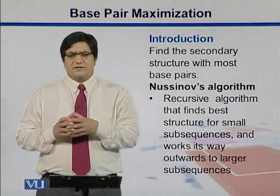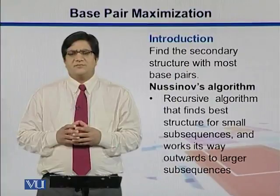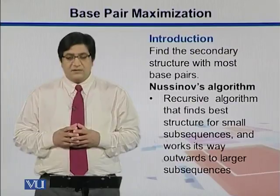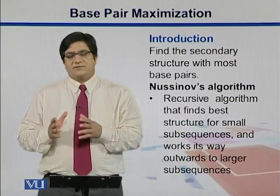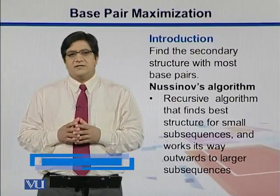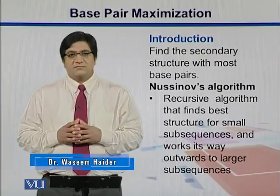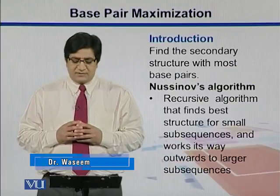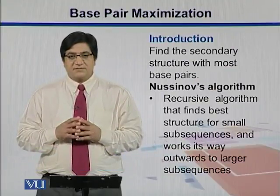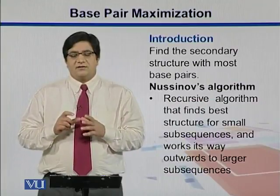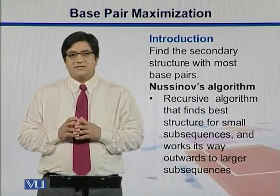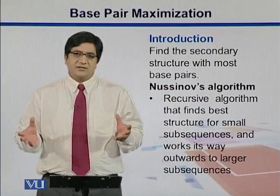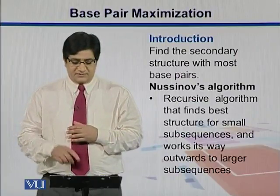Base pair maximization is a greedy approach where it tries to get the maximum base pairs, so that's why we call it base pair maximization. It is implemented in the Nussinov algorithm, named after Russian scientist Nussinov. It is a recursive algorithm that finds the best structure for small subsequences, and once it gets those subsequences, it moves outwards to take all the remaining nucleotides and make up some bigger structures.